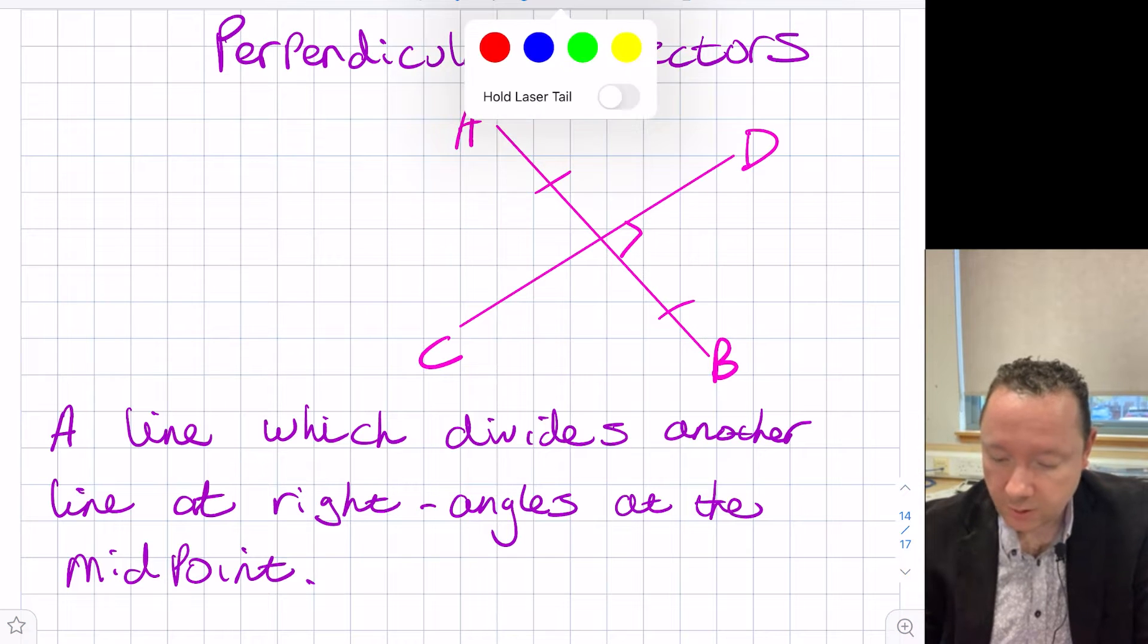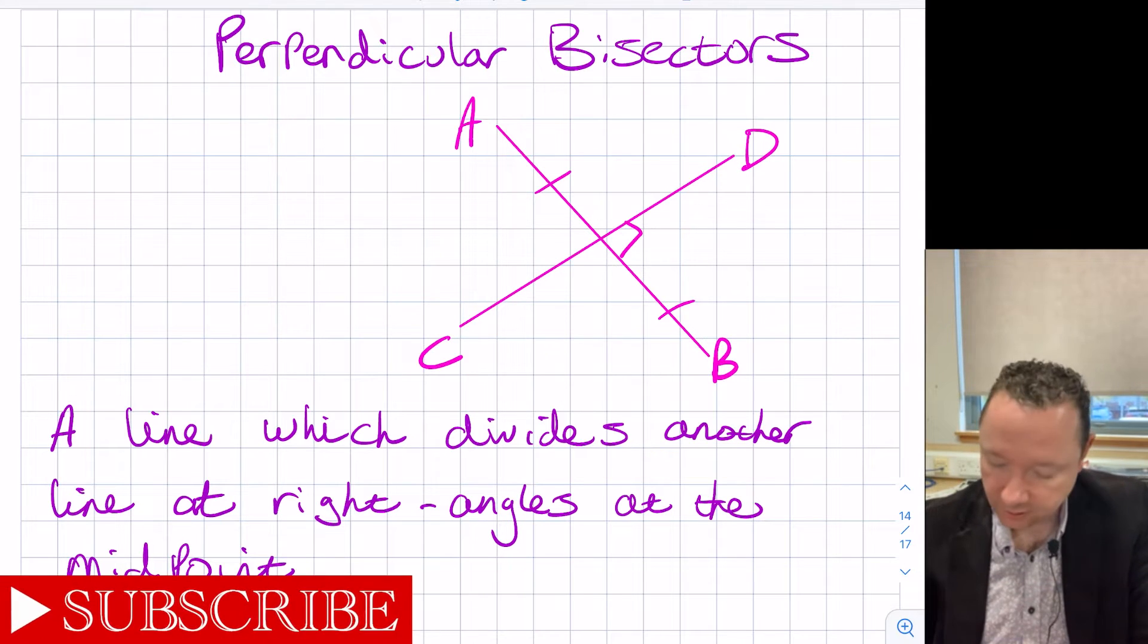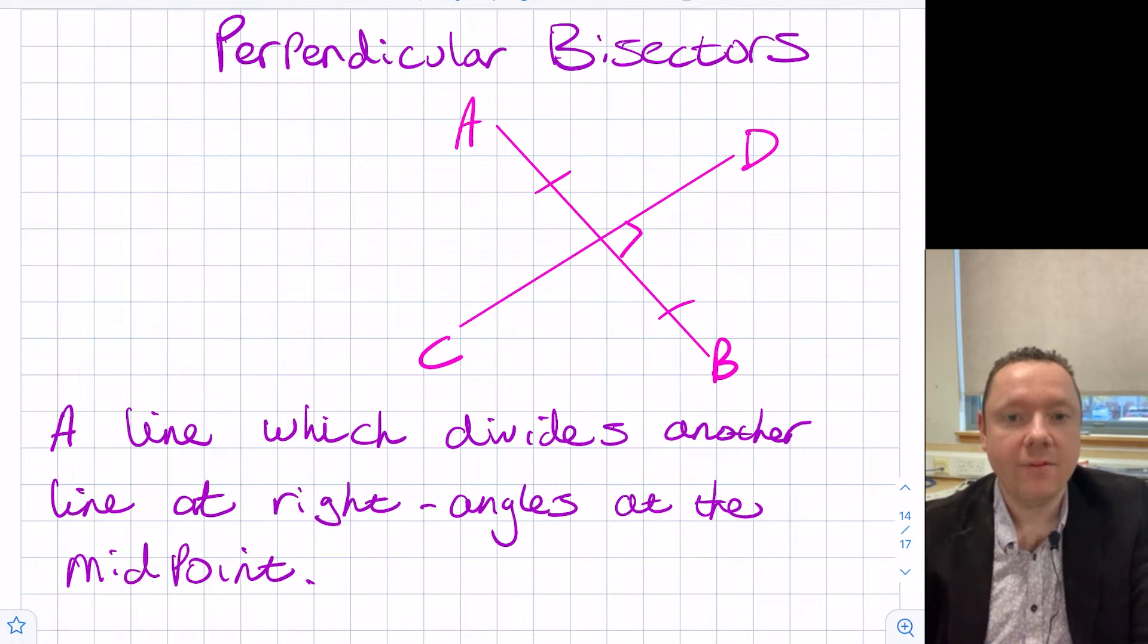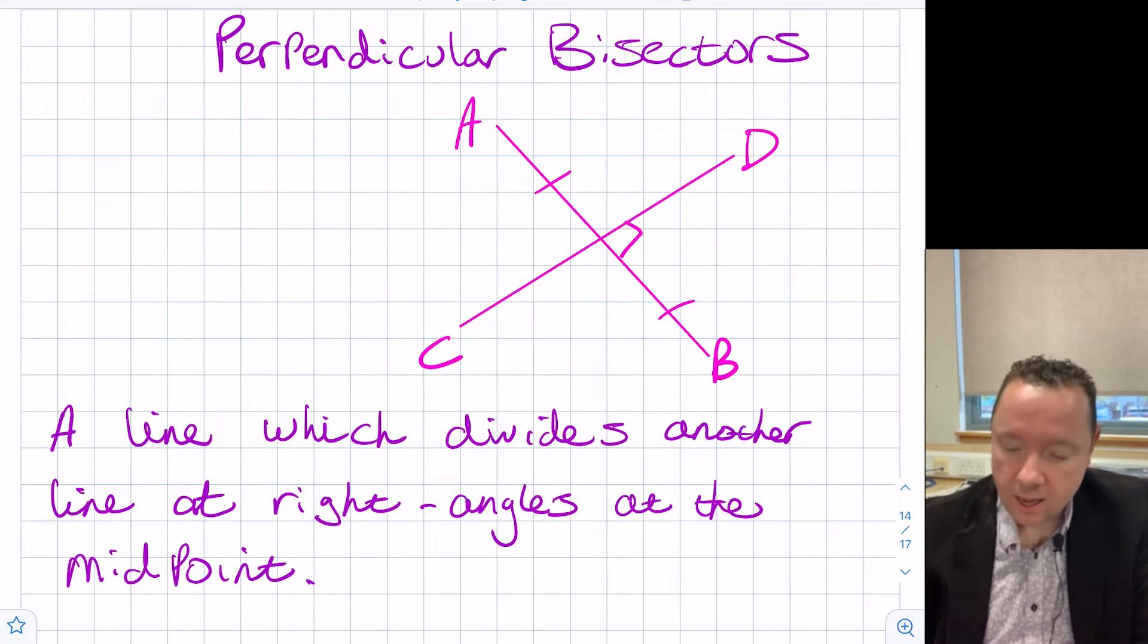The first one we're going to look at is a perpendicular bisector. If you take any line, let's call it A and B, and we draw another line at right angles, if it cuts it in half it is called a perpendicular bisector. So it cuts it in half at right angles. That would happen in an isosceles triangle or an equilateral triangle for instance. We'll look at a few practical examples of this.